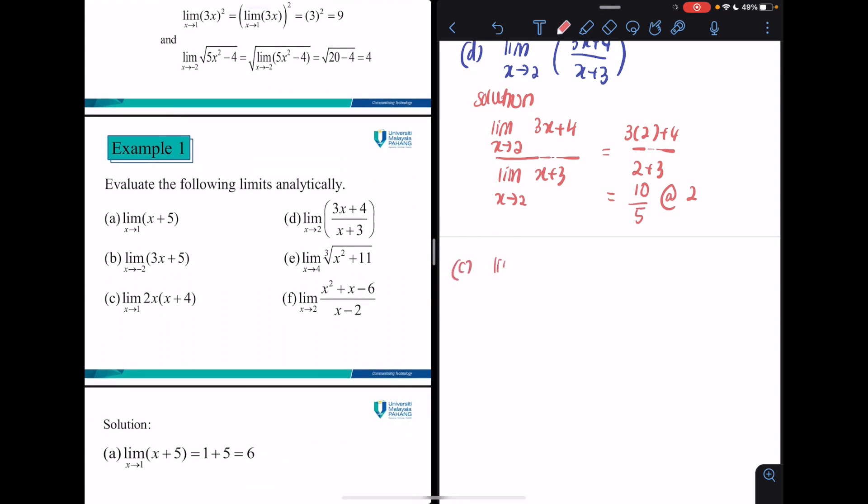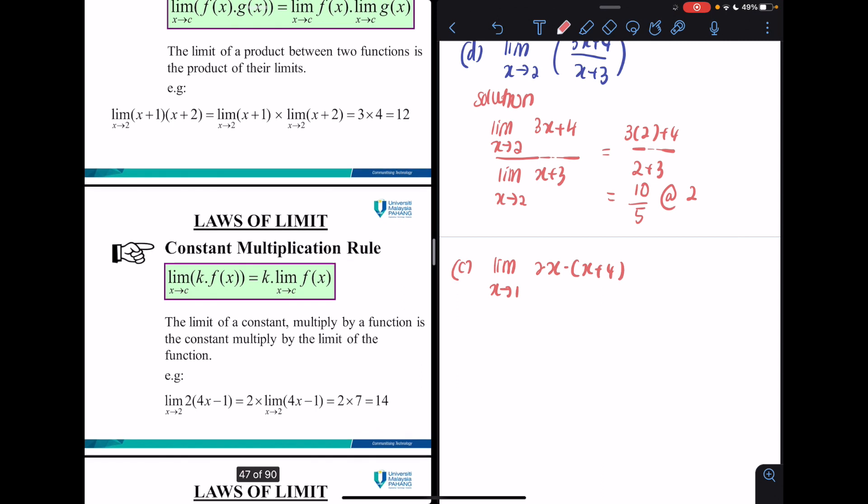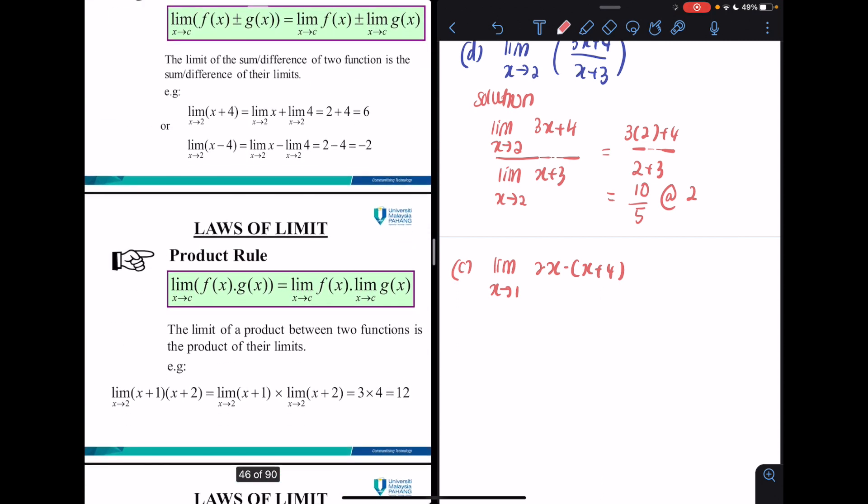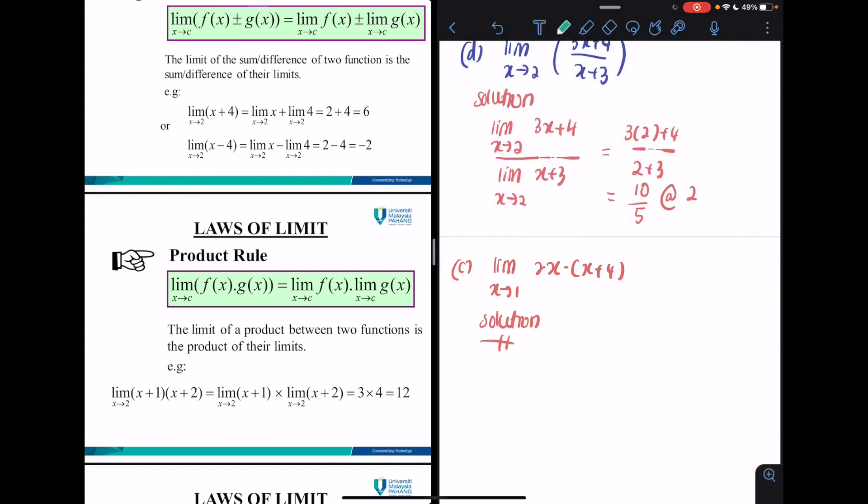Question c: limit x approaching 1 for function 2x times x plus 4. In this case, you have to use the product rule in order to solve this problem. So let's take a look at how we can apply the product rule in solving this problem.